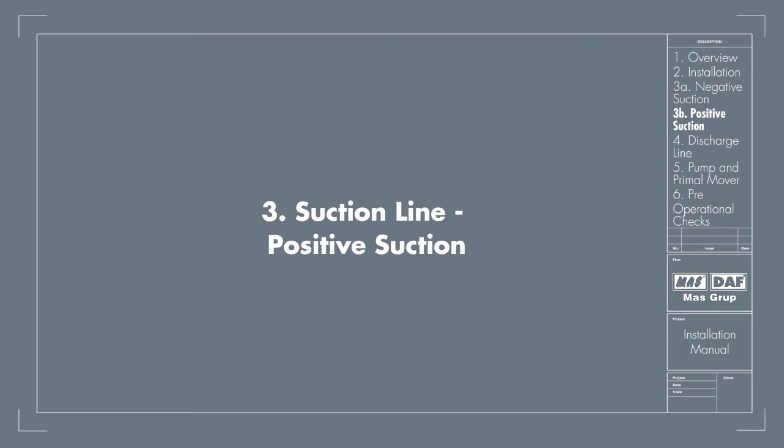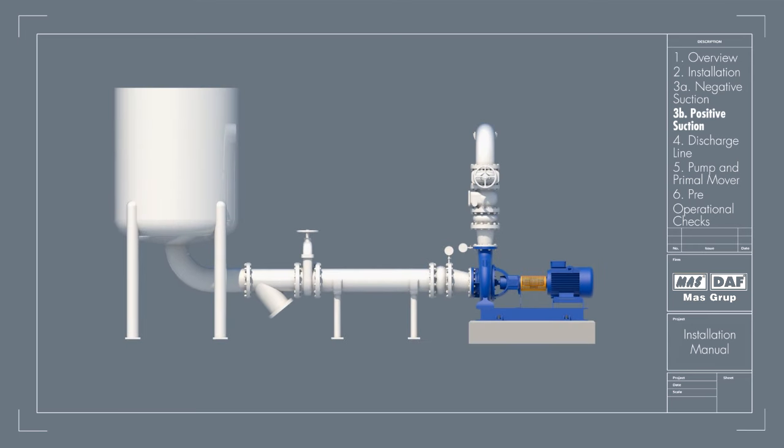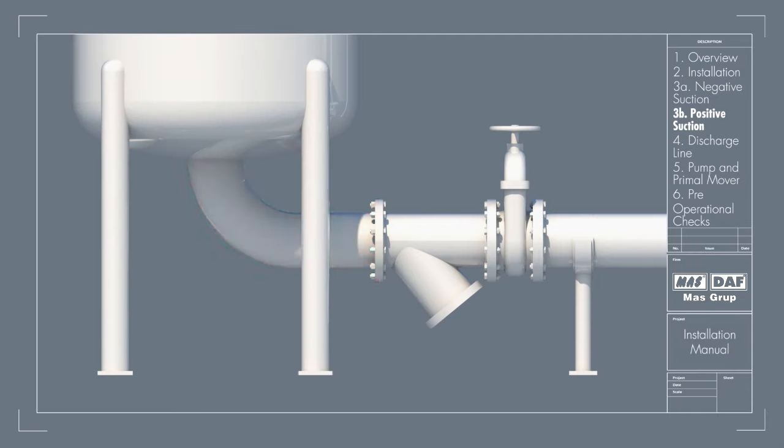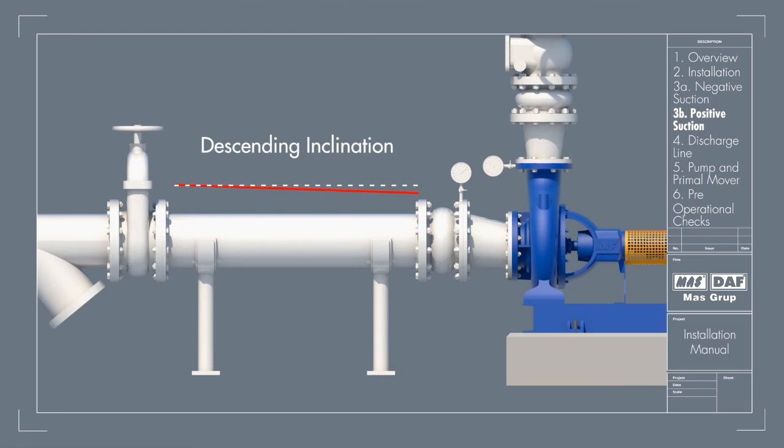Suction line, positive suction: In case the water is being supplied to the suction through gravity, a slightly different setup is needed. The elbow should be standard type or long radius type. Isolation valve should be provided in suction line. The pipe from the tank to the pump should have a descending inclination. The straight length of pipe between the pump inlet and tank should be at least 3 to 6 times the pipe diameter. The suction pipe should be sized to ensure the max liquid velocity of 3 meters per second.